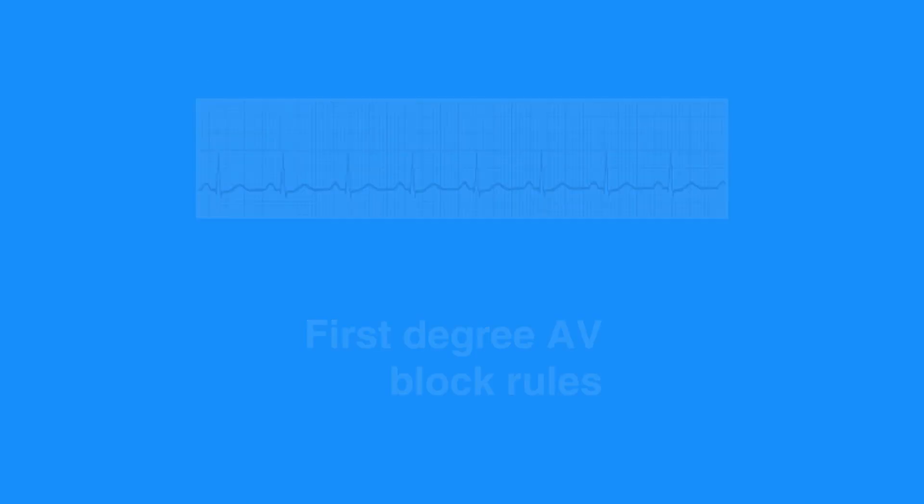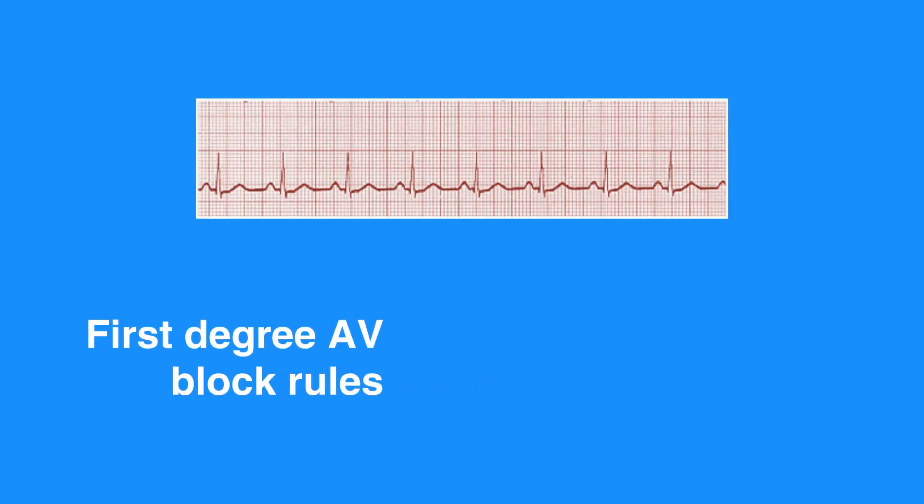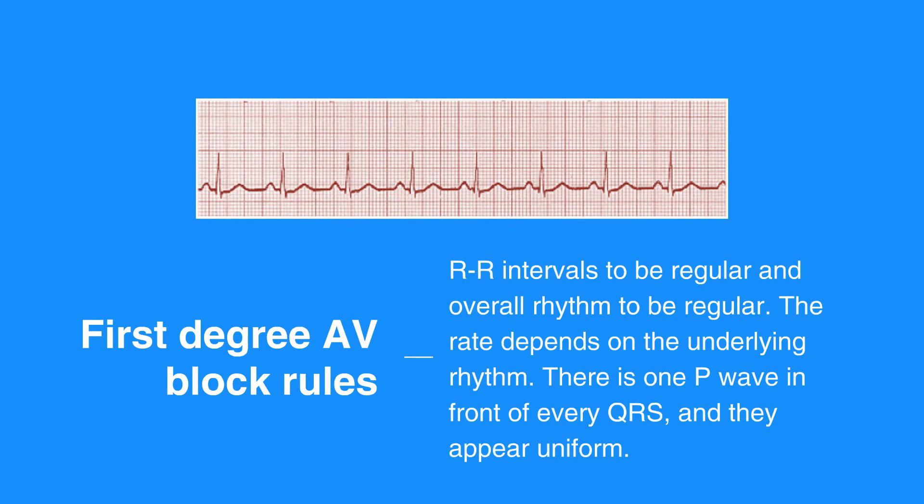First degree AV block rules include RR intervals to be regular and overall rhythm to be regular. The rate depends on the underlying rhythm. There is one P wave in front of every QRS and they appear uniform. The PR interval measures more than 0.2 seconds in duration and is consistent. The QRS complex measures less than 0.12 seconds.